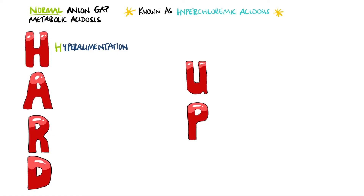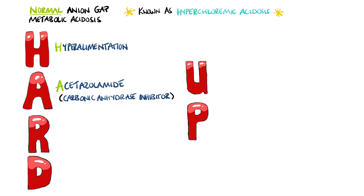H stands for hyperalimentation, meaning usage of total parenteral nutrition, and A stands for acetazolamide use, which is a carbonic anhydrase inhibitor. The R is one of the biggest causes, which is renal tubular acidosis.